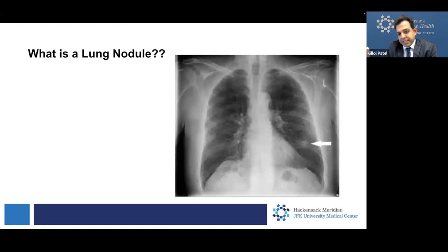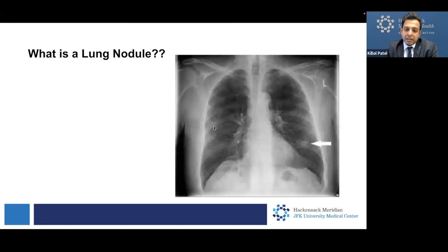This is a chest x-ray for those who are not familiar with it — it's usually in black and white. I wanted to give you an idea about what the spot looks like. On this side is the right lung. The lung usually appears black on a chest x-ray because air appears black on it, so it should be completely black. The white lines that you see are your ribs. This is the heart in the center.